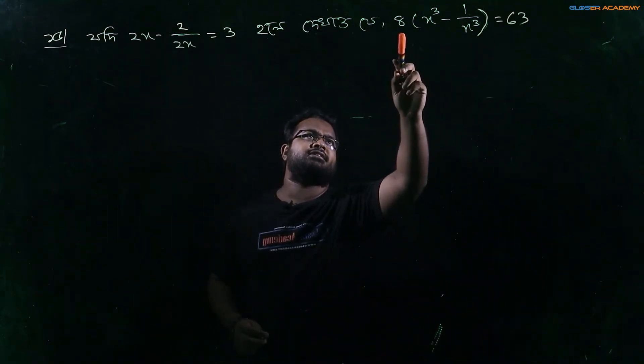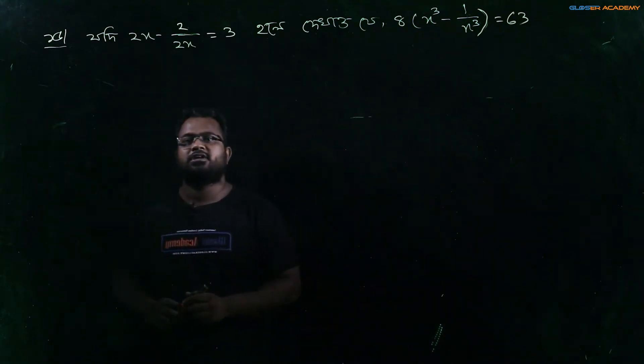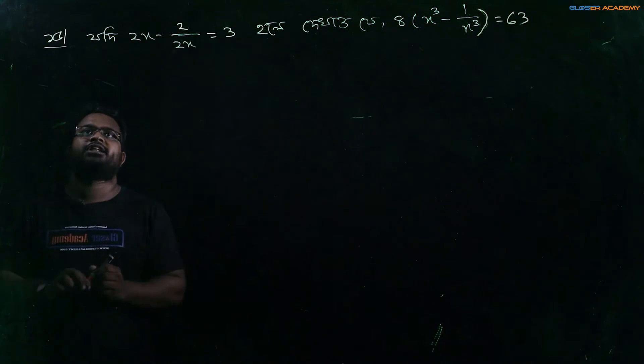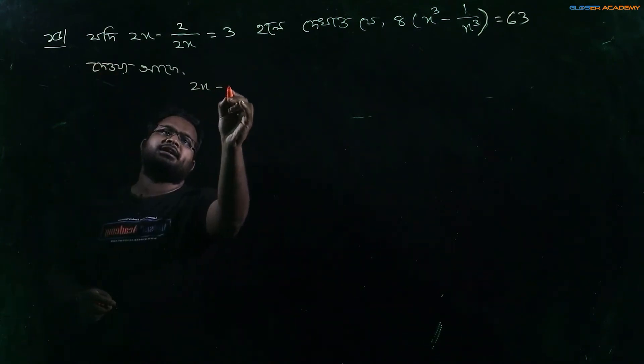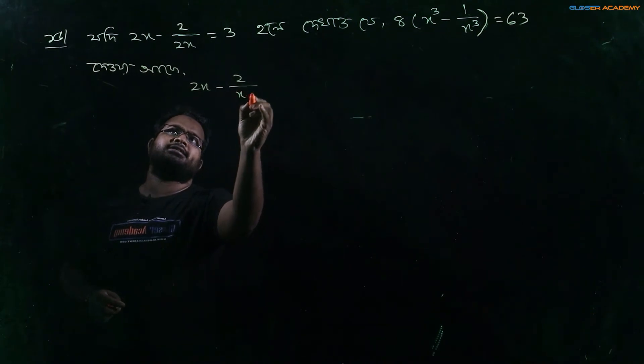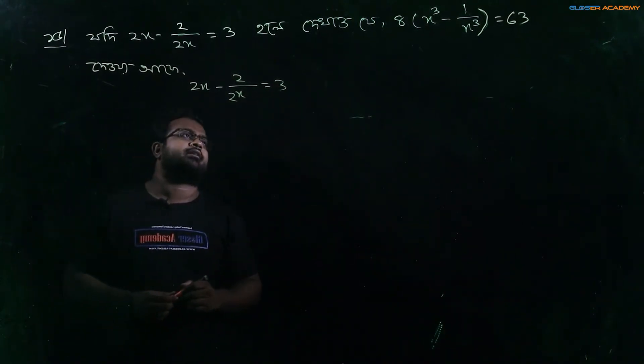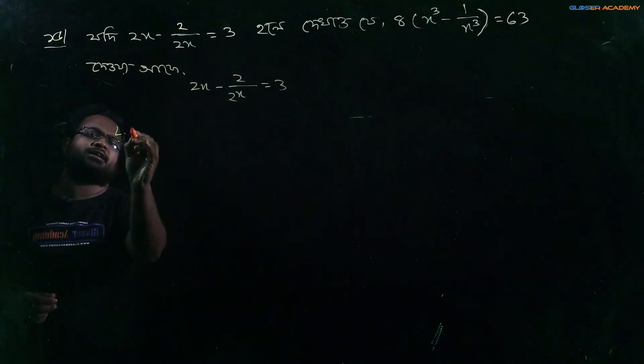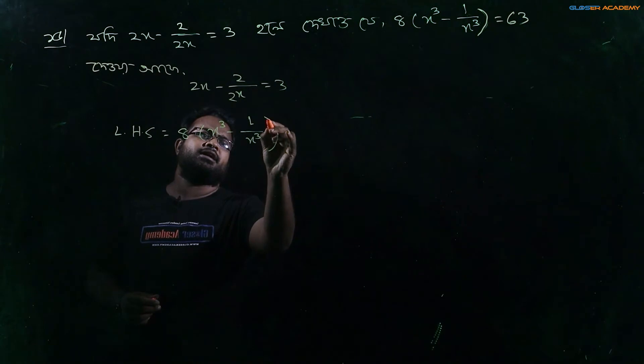So let's see, 8x cube minus 1 by x cube. So let's see, 2x minus 2 by x, 2 by 2x equals 3. So let's see, left hand side, left hand side, 8x cube minus 1 by x cube.